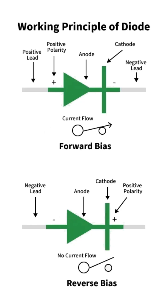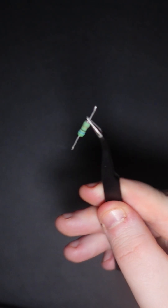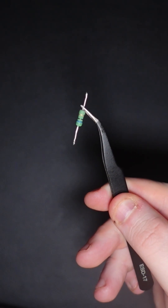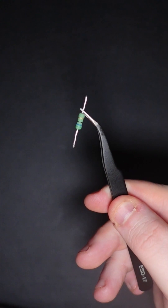It's always important to put them in the right way, as diodes only let current flow one way. This is in contrast to resistors, which have no polarity, so you can put them in any direction.